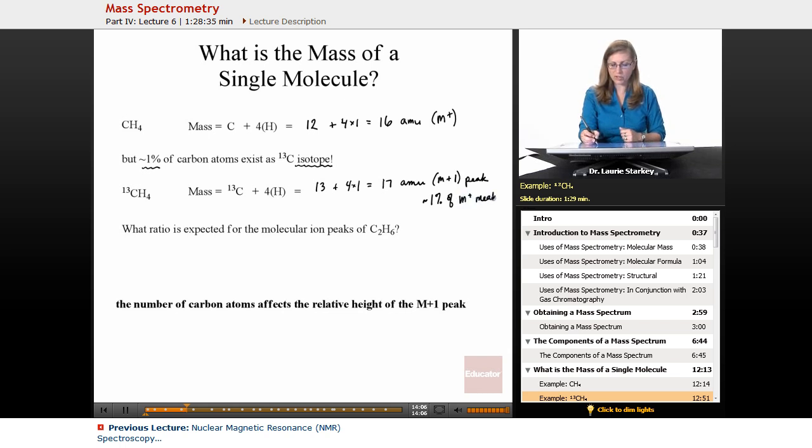And that's pretty small because our molecular ion peak is usually not a very large peak because fragmentation usually occurs quite readily. So it's usually a small peak. So we're looking at 1%. So it might be very, very small.